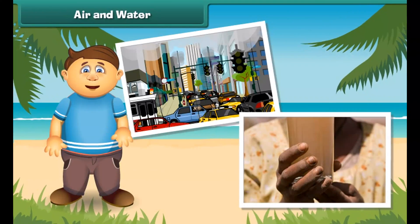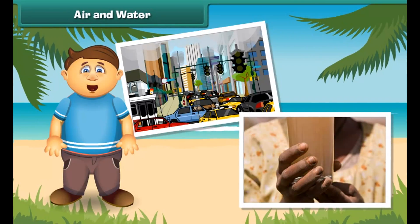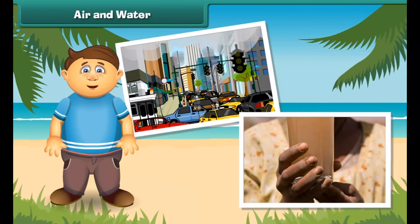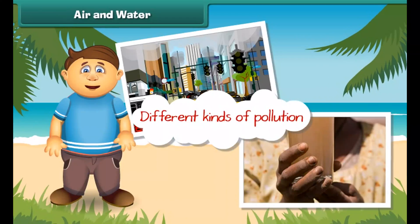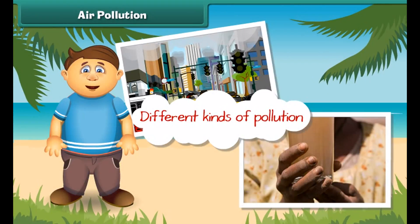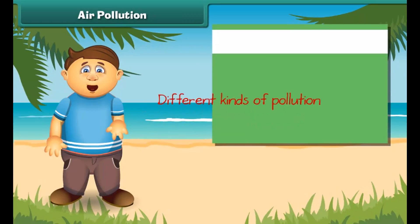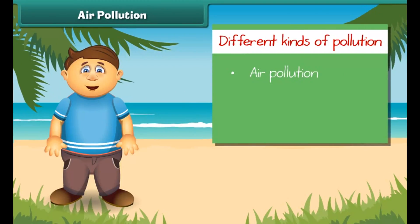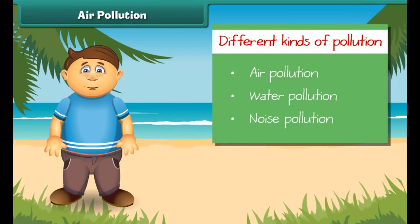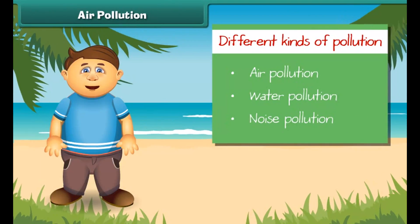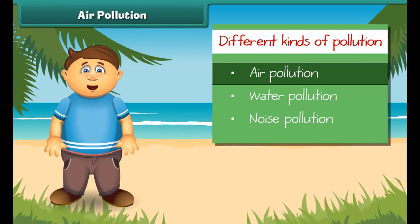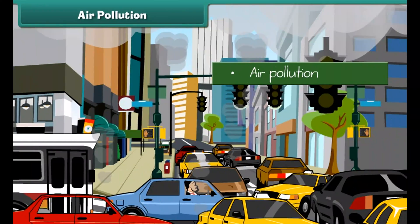Friends, as we all know, air and water mainly support life on the earth, but now these two are getting dirty day by day. As a result, there is no fresh air to breathe and clean water to drink. So let us discuss in detail the different kinds of pollution. Actually, pollution is mainly of three types: air pollution, water pollution, and noise pollution.